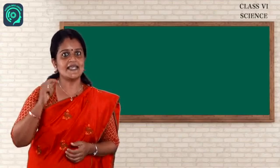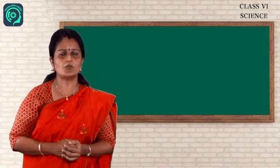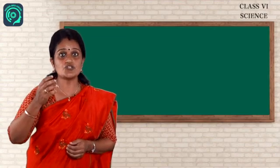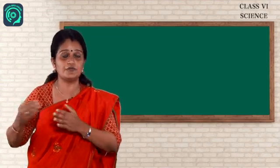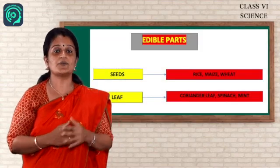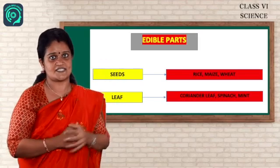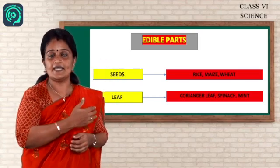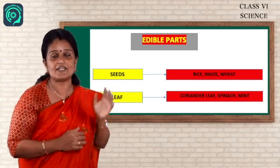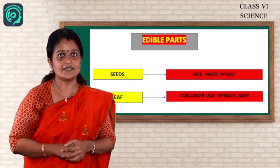So students, next we are going to study the important portion of this chapter. Edible parts. What do you mean by edible? The parts which we can use or which we can prepare food is called the edible parts. So in this slide, you can see that the rice, wheat, maize are examples for the seeds. Next one is coriander leaves, spinach, mint, that's all examples for the leaf. So that leaf parts we can use. That is an edible part.